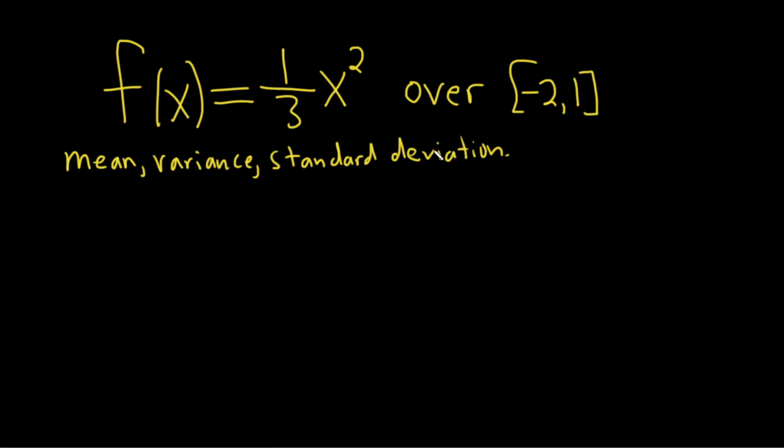Let's start by finding the mean. The mean is μ, equal to the expected value of x. This is defined as the definite integral from a to b of x times f(x) dx, where f(x) is the probability density function.